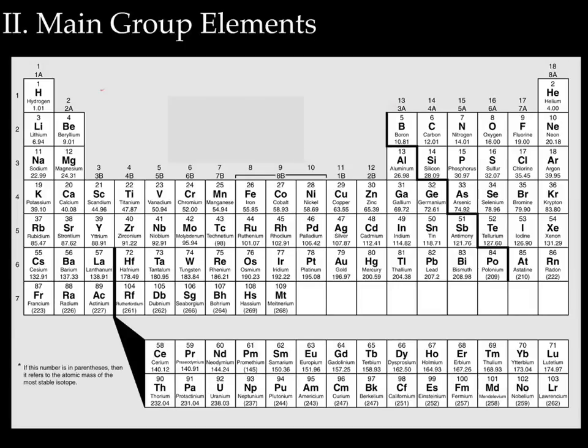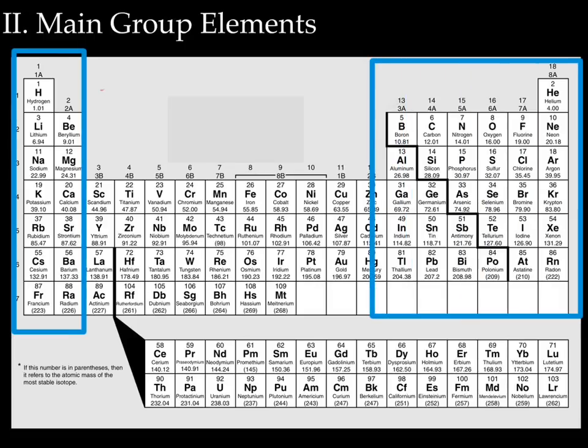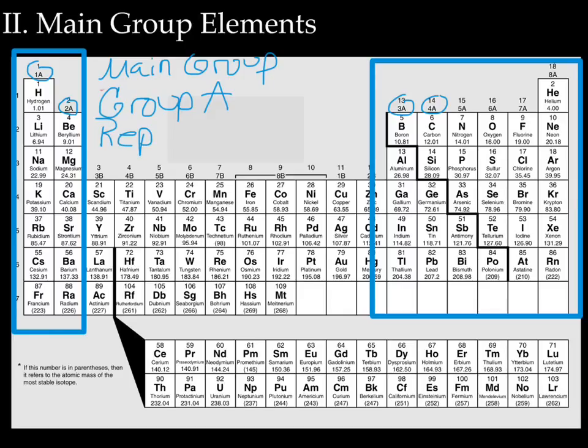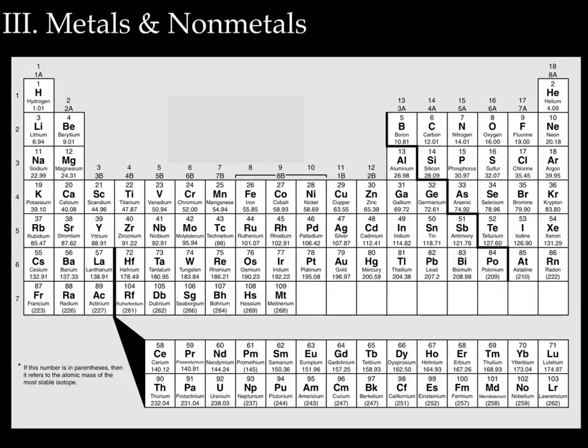Next let's talk about the main group elements. The main group elements consist of groups 1 and 2, or also known as 1A and 2A, and groups 13 through 18, or also known as groups 3A through 8A. Those are known as the main group elements. They can also be called the group A elements, and their last name is representative. Representative elements.